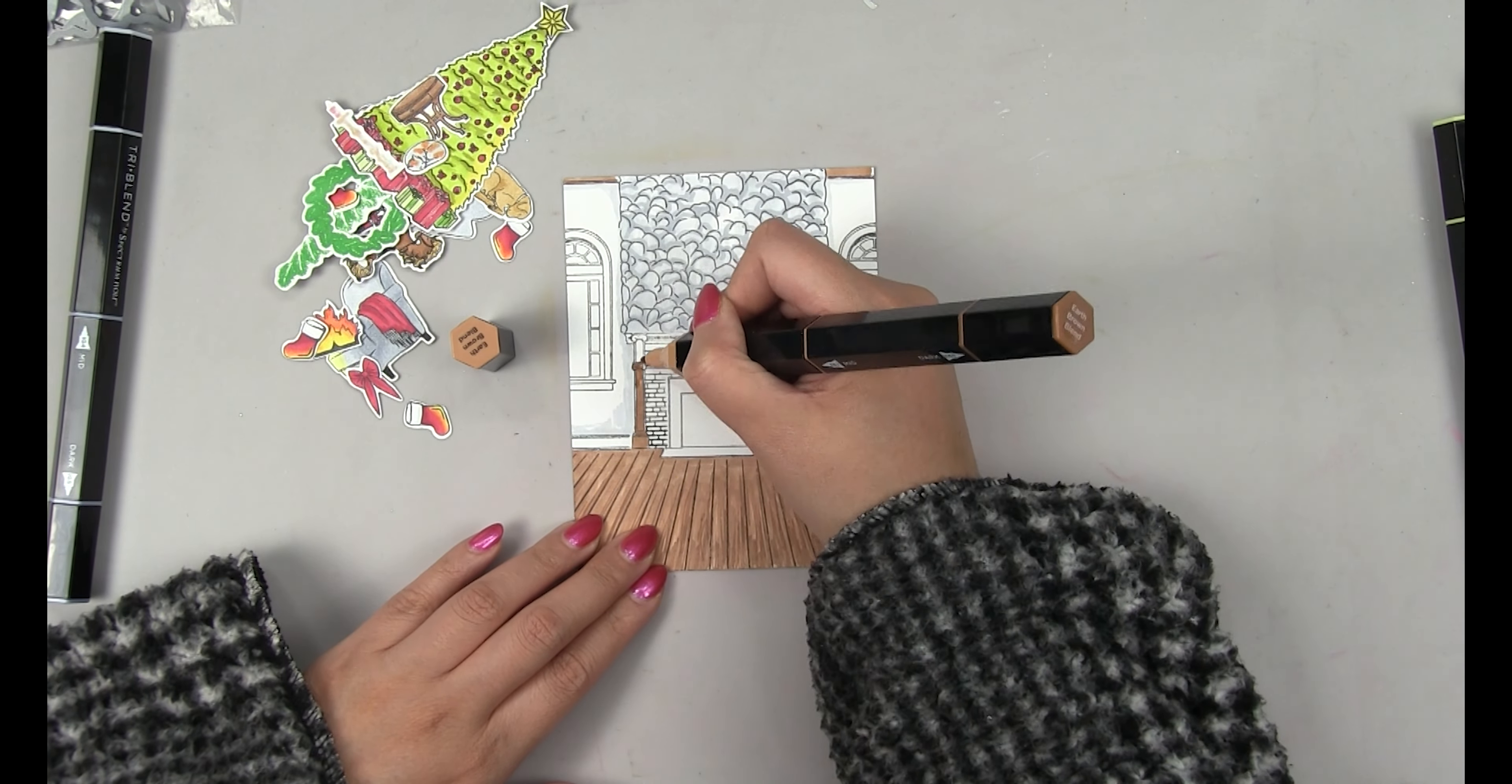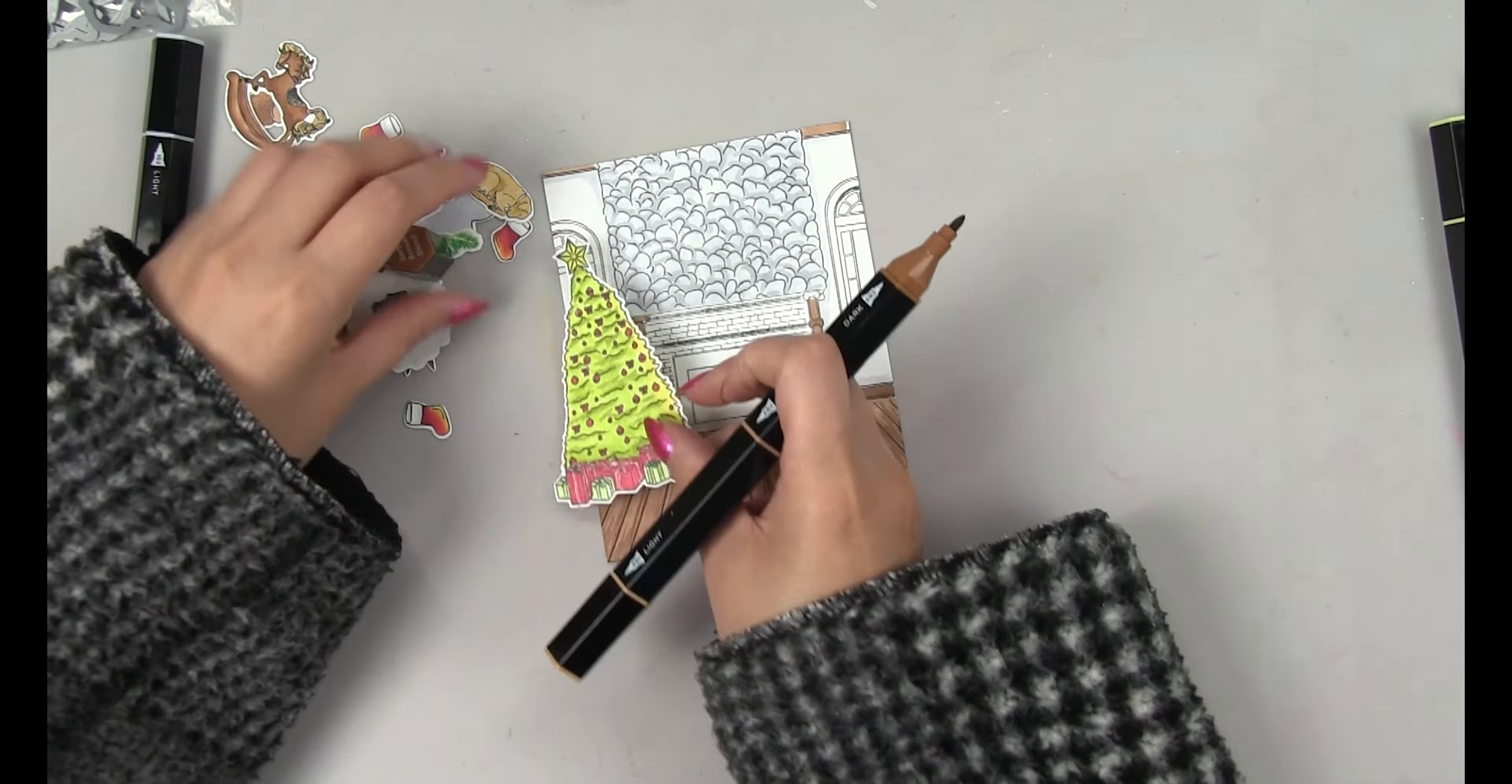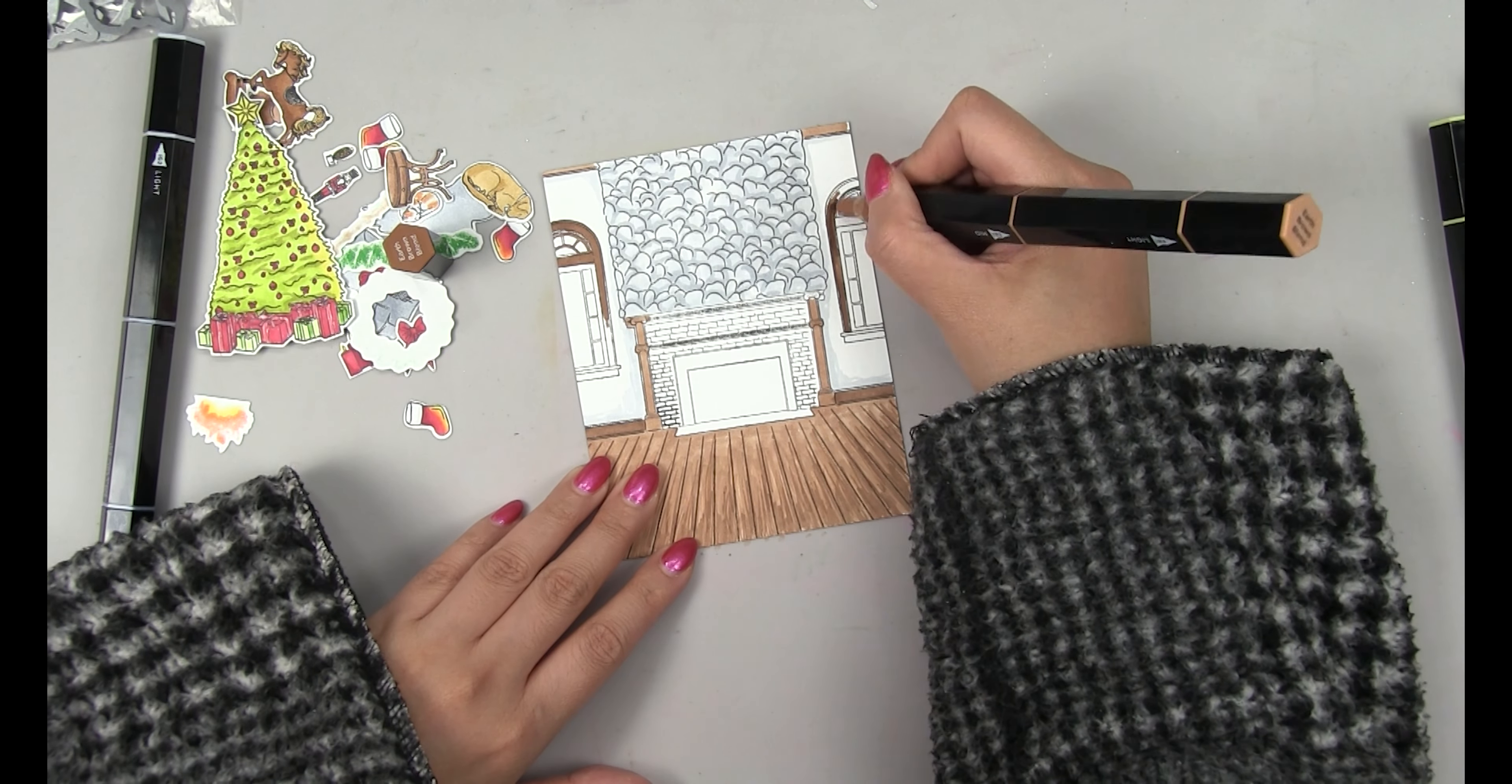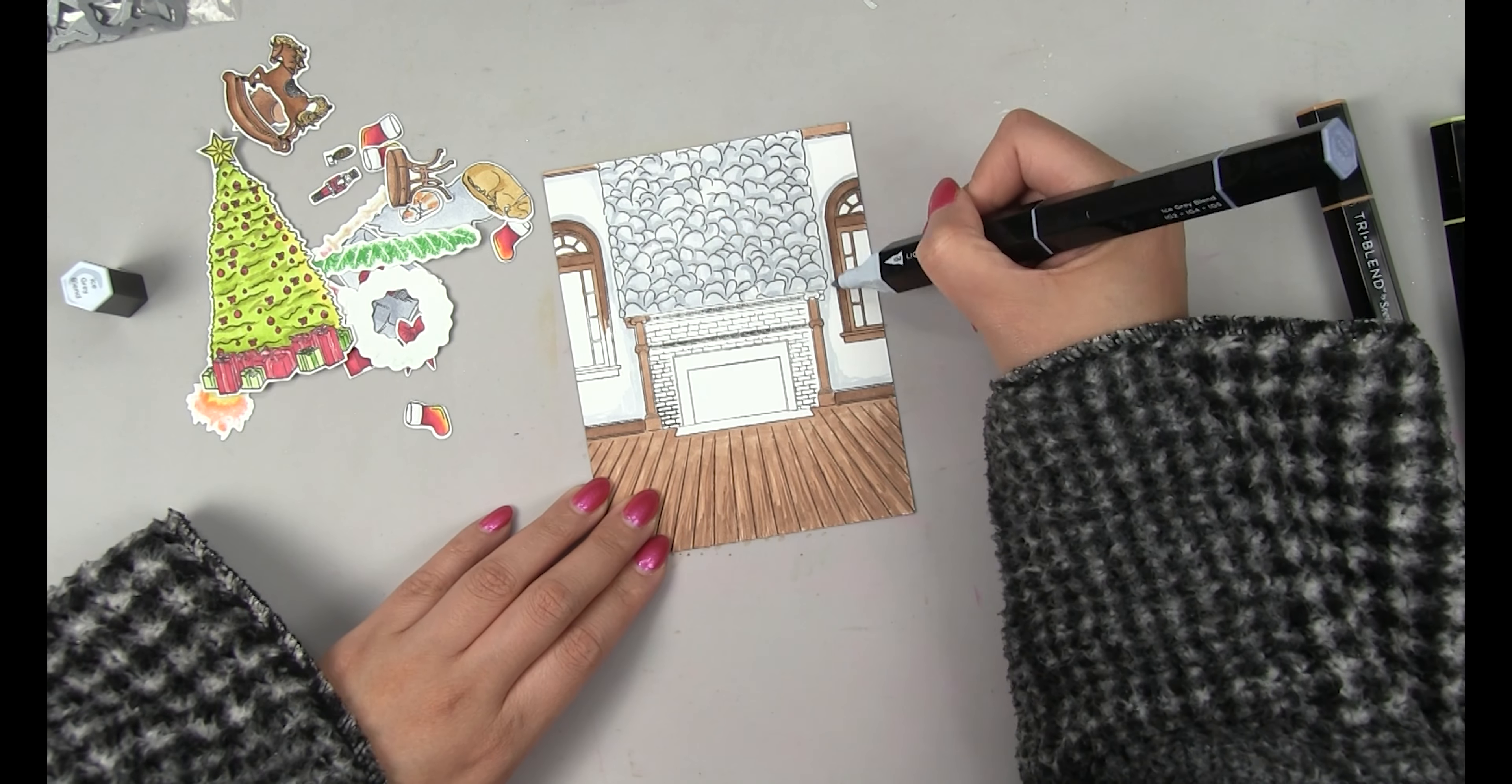Next I'll use the light brown marker for the base paneling and the fireplace the wooden portions of the fireplace and also the frames of the windows. Now the tree is going to take up a large portion of the left side of my background so I place the tree over the background to see where I don't need to color so I'm going to leave portions of the left window uncolored.